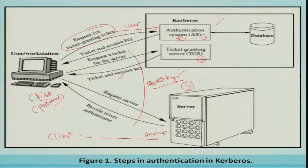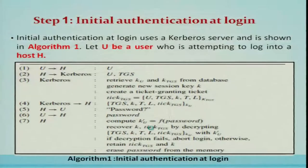The ticket granting server uses the Kerberos authenticator to verify the identity of the client, then issues a ticket and session key for the target server. The client uses this ticket and session key to request the service directly from the server. A secret key is exchanged between client and server, and thereafter all messages from the client are encrypted with that secret key, ensuring secure communication on the network.